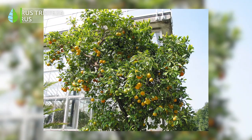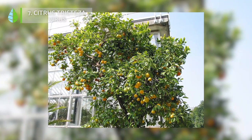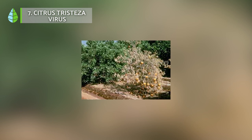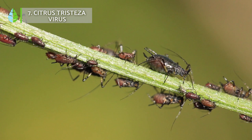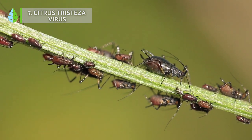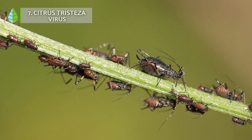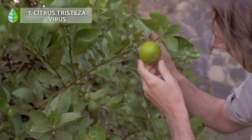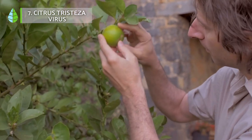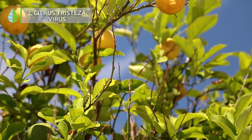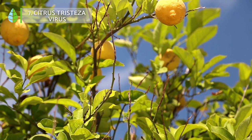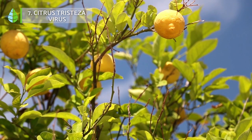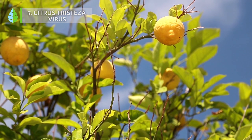Citrus tristeza virus. Citrus tristeza virus, also known as CTV, is a highly contagious disease that can kill lemon trees in a few weeks. It is spread by aphids and can cause a wide range of symptoms, including stunting, yellowing leaves, and premature flowering. There is no cure for CTV, so affected trees must also be removed to prevent the disease from spreading to others.